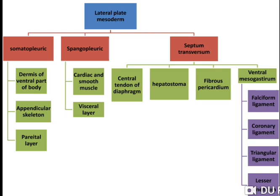Lateral plate mesoderm differentiates into somatopleuric, splanchnopleuric and septum transversum. Somatopleuric differentiates into dermis of the ventral part of the body, appendicular skeleton and parietal layer. Splanchnopleuric gives rise to cardiac and smooth muscles and visceral layer.